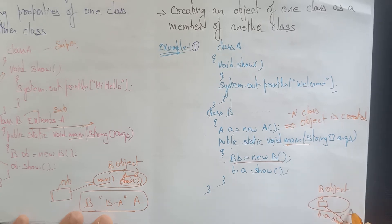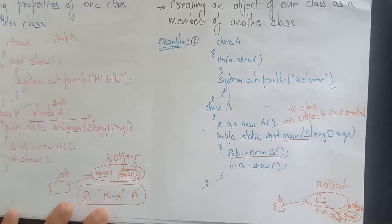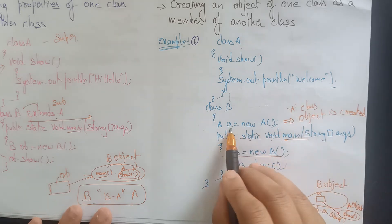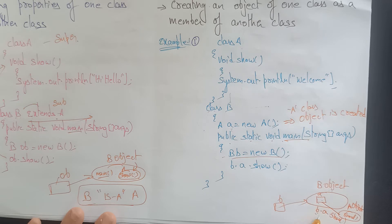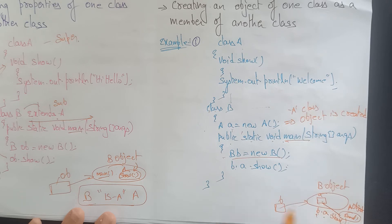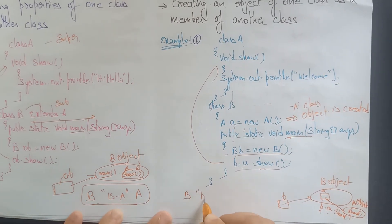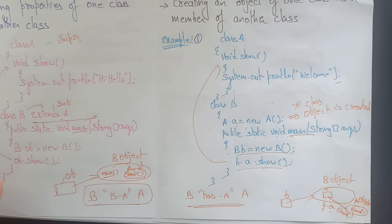The show method is accessed via the B object reference, and within B, the A reference is there. So memory is allocated for A inside B, and we access the show method through it. This means class B is having a 'has-a' relationship with A — not 'is-a'. 'is-a' means inherited; 'has-a' means it contains an object.